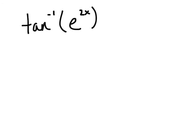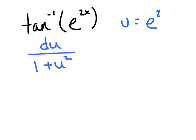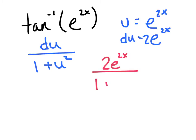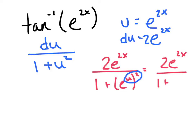Let's try some arctan. The formula changes to du over 1 plus u squared. For arctan(e^(2x)): identify u equals e^(2x), and du is — leave it alone and take the derivative of the exponent — 2e^(2x). Substituting in: 2e^(2x) all over 1 plus (e^(2x))². Cleaning up, that's 2e^(2x) all over 1 plus e^(4x), using the power-to-a-power rule.